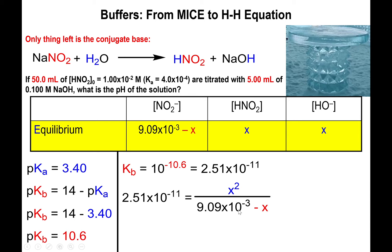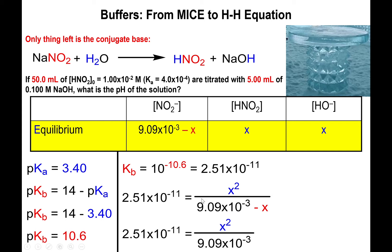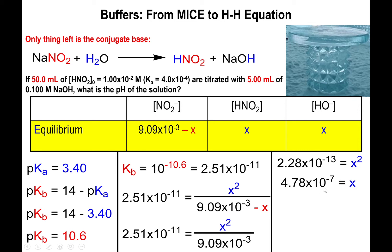So we use Kb = 2.51 × 10⁻¹¹, not 4 × 10⁻⁴. Setting up: 2.51 × 10⁻¹¹ = x² / (9.09 × 10⁻³ − x). Since the ratio of initial concentration to Kb is roughly 100 million — far greater than 400 — we can disregard the minus x. We multiply 2.51 × 10⁻¹¹ by 9.09 × 10⁻³ and take the square root, giving x = 4.78 × 10⁻⁷.